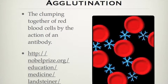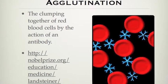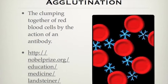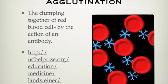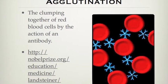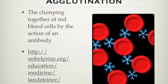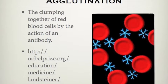Agglutination is the clumping together of red blood cells by action of the antibody. This is what happens when the wrong blood type is given to a person. If you go to the link at NobelPrize.org, you can play the blood typing game and see what happens — it's also a good way to understand how to use antibodies and anti-serum to blood type.